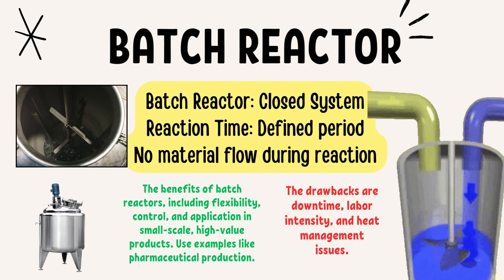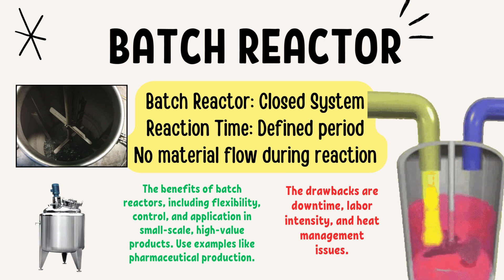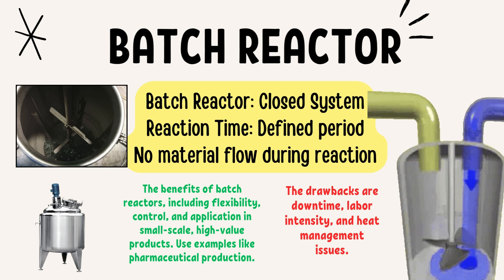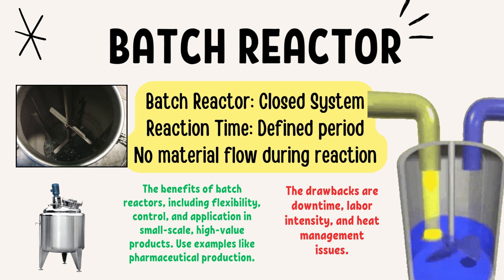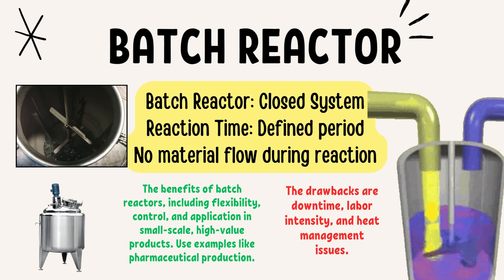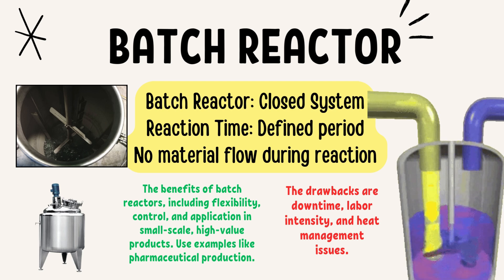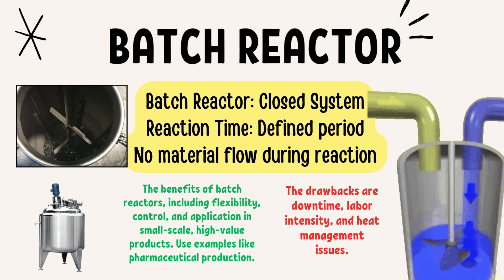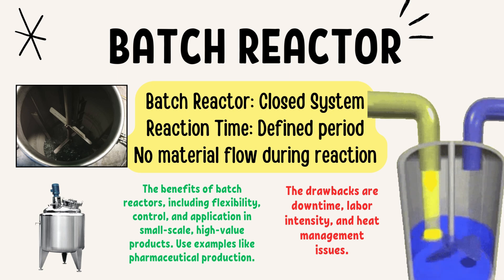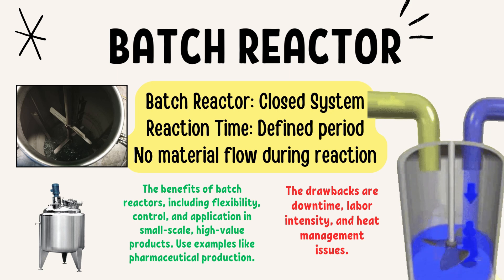Let's start with the first type: the batch reactor. This is a closed system where all the reactants are added at the beginning of the process. The reactor is then sealed and the reaction is allowed to proceed over a set period of time without any additional input of reactants or removal of products during that time. In simple words, initially all reactants are fed into the reactor, it is sealed, and under set parameters the reactants are made to react.